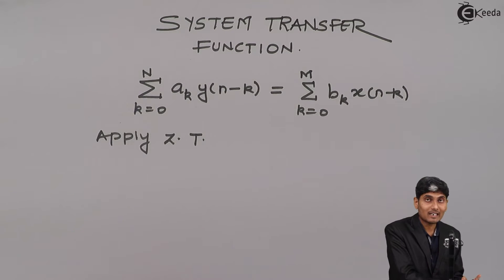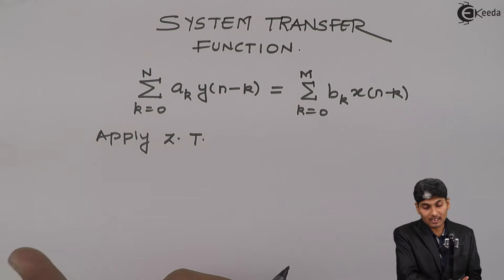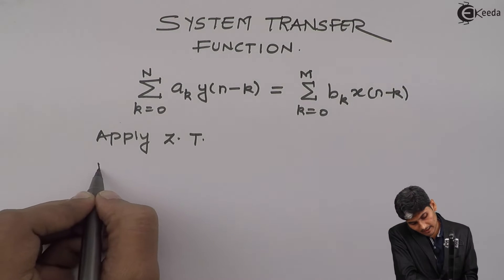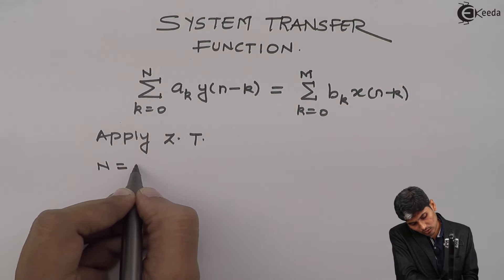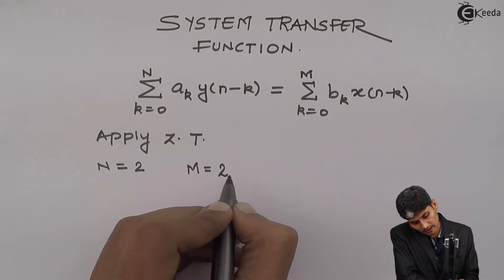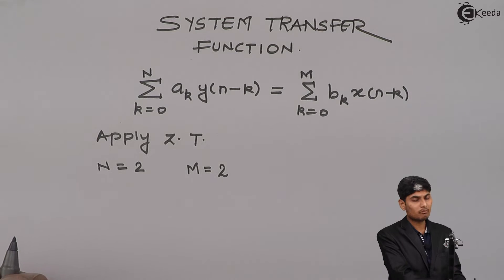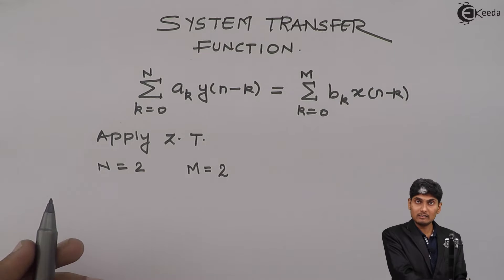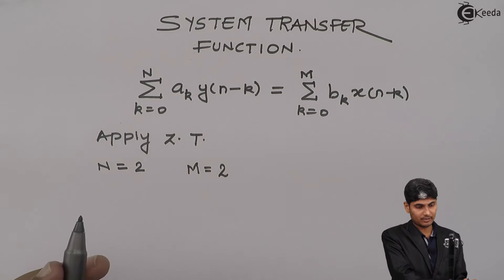To avoid confusion, I will be taking some value for n and some value for m. It is just an assumption. Let us say that n equals 2 and m equals 2 again. It is not mandatory that n and m values should be equal. n can be greater than m or vice versa.